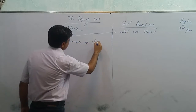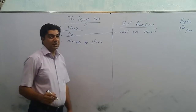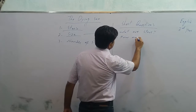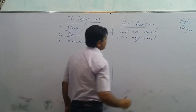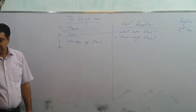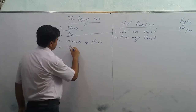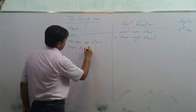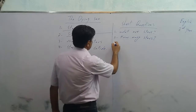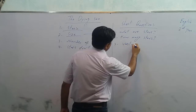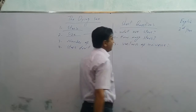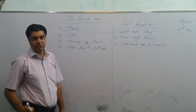Another topic is the number of stars — how many stars are there in the universe? Then the next question can be about stars not colliding. This question is about the vastness of the universe: how vast is the universe? How big is the universe?